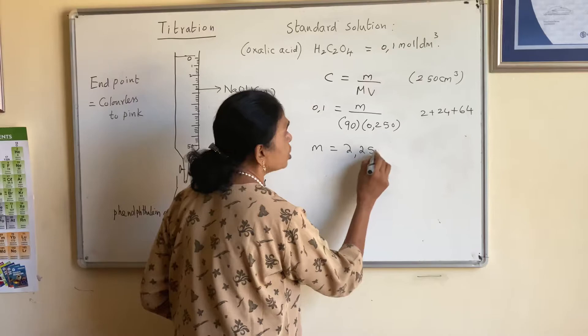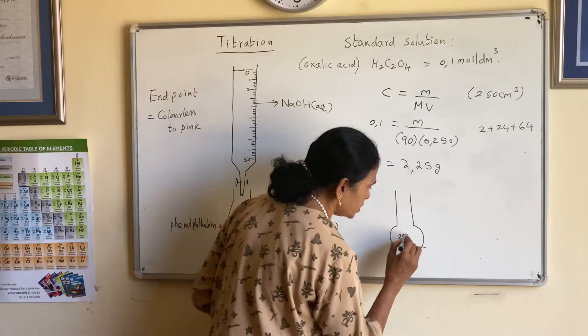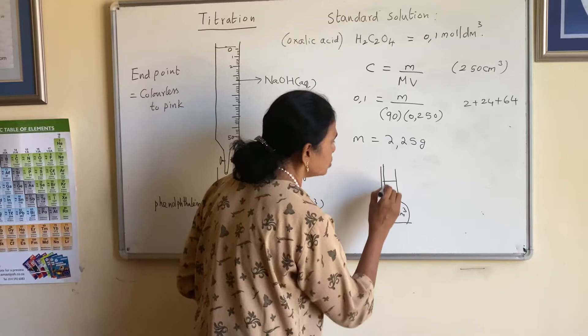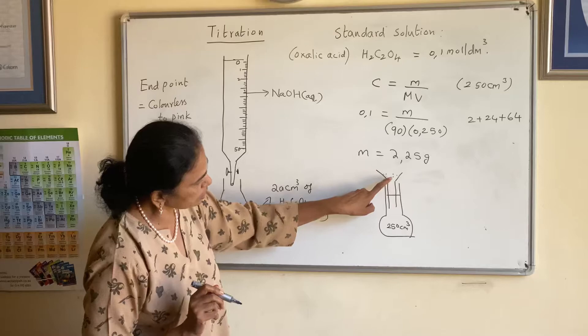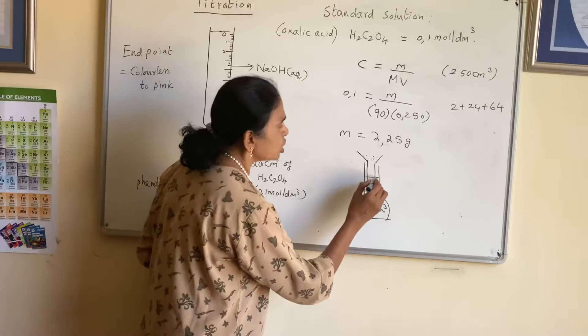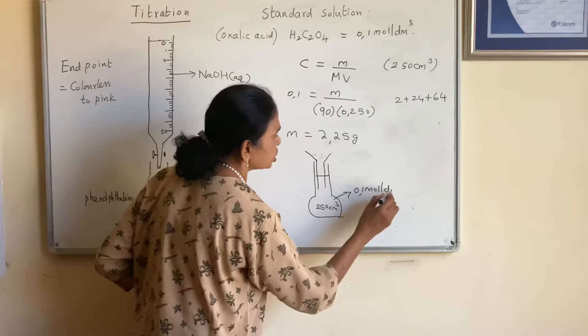The mass needed is 2.25 grams. In the laboratory there is a standard flask — it has a round bottom, is marked 250 cm³, and has a graduation mark. Put a funnel in, transfer the oxalic acid solid, wash all parts of the funnel to ensure all chemicals are inside, then add water up to the mark, remove the funnel, and shake it. That is your standard solution.